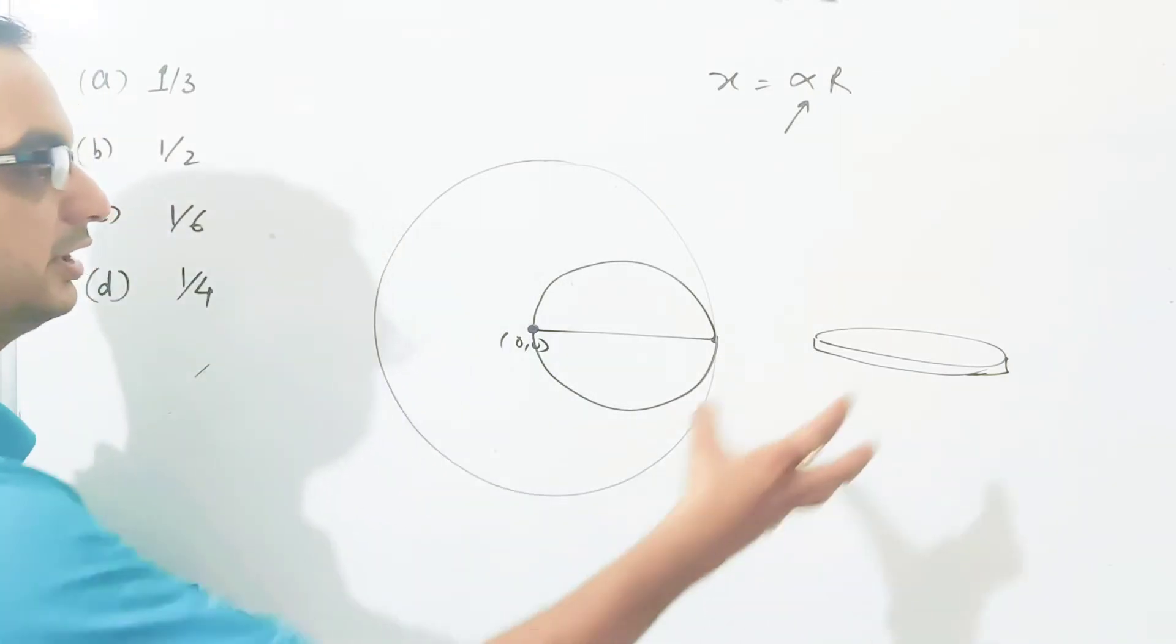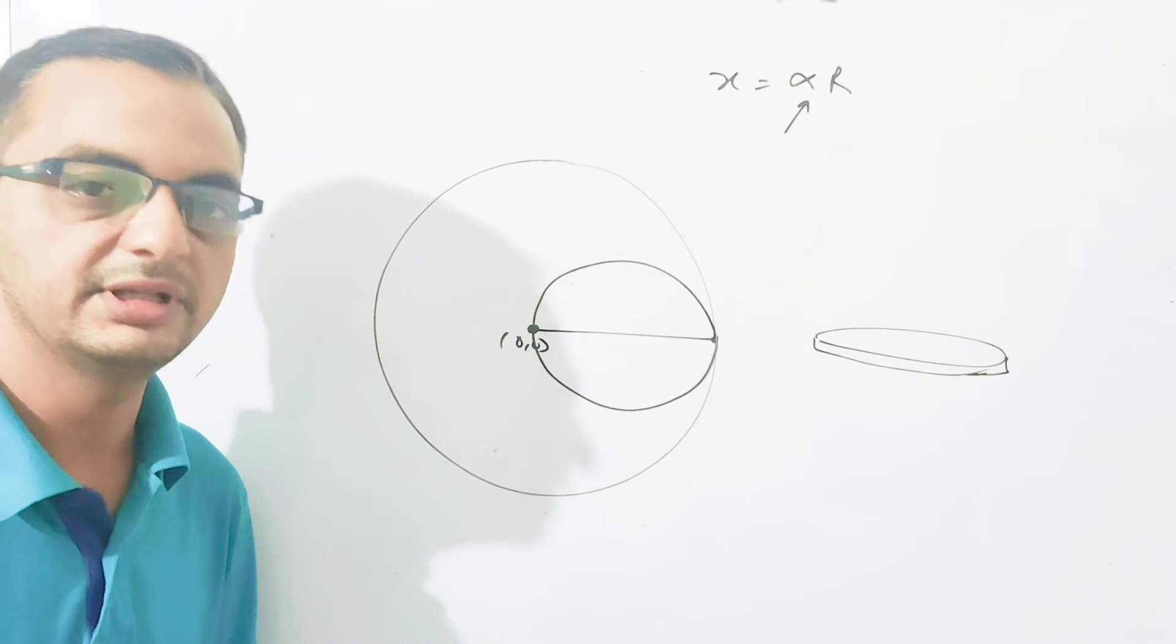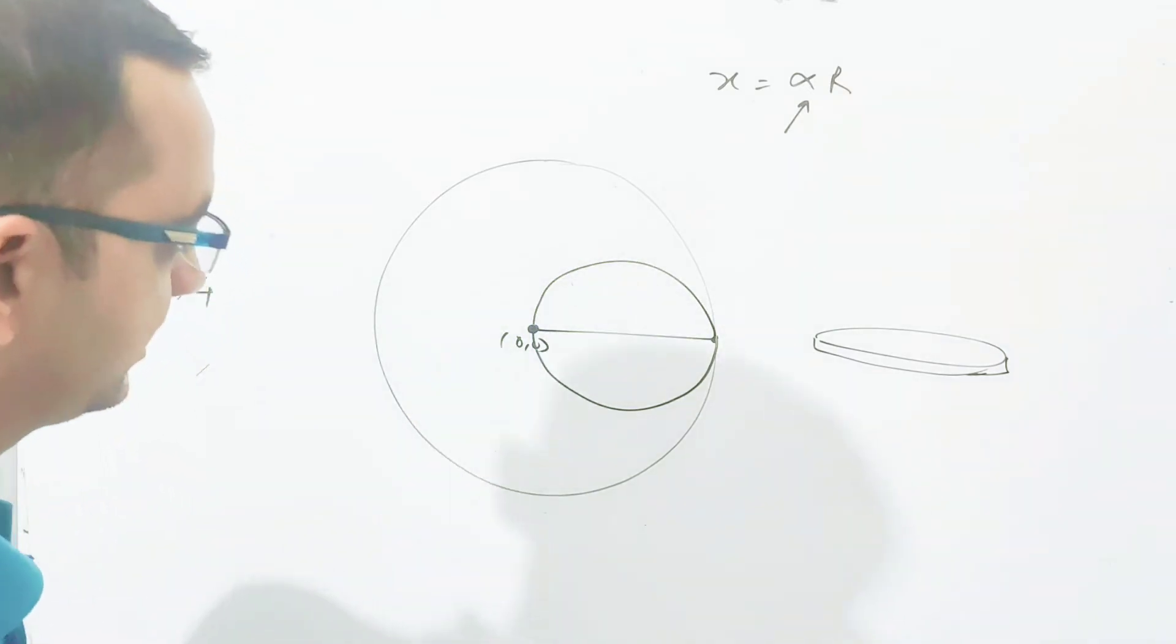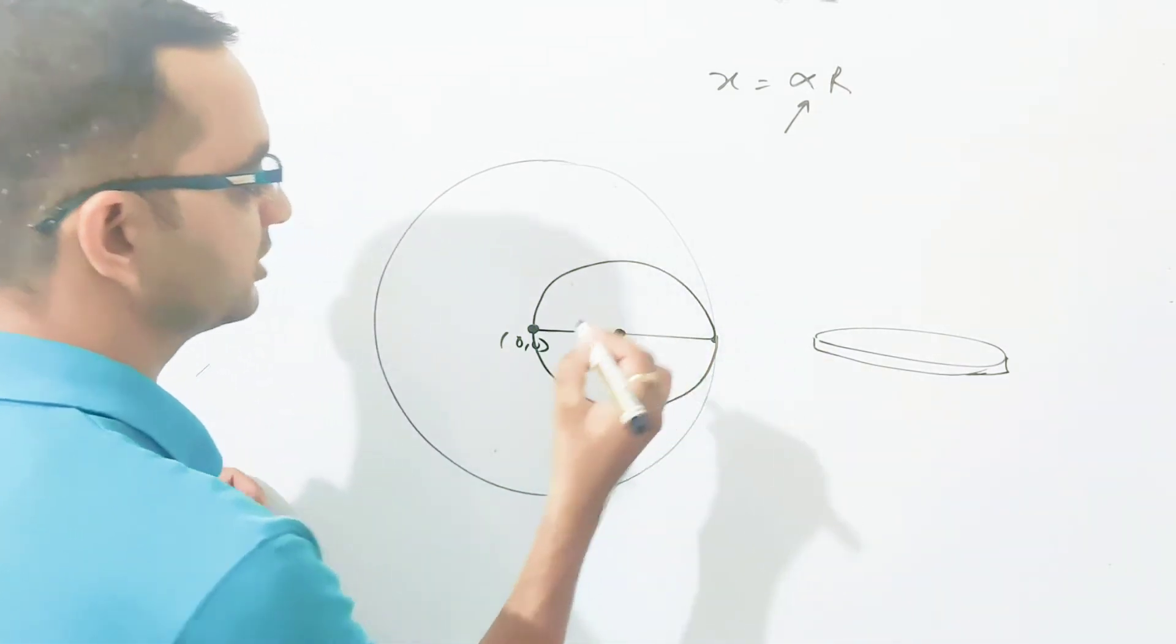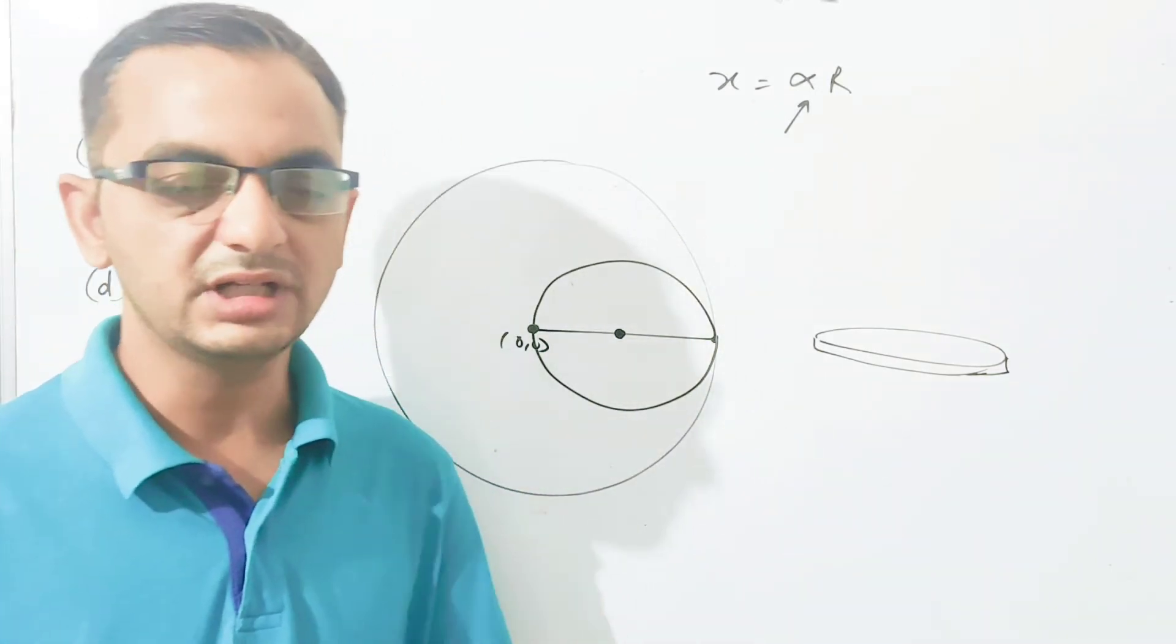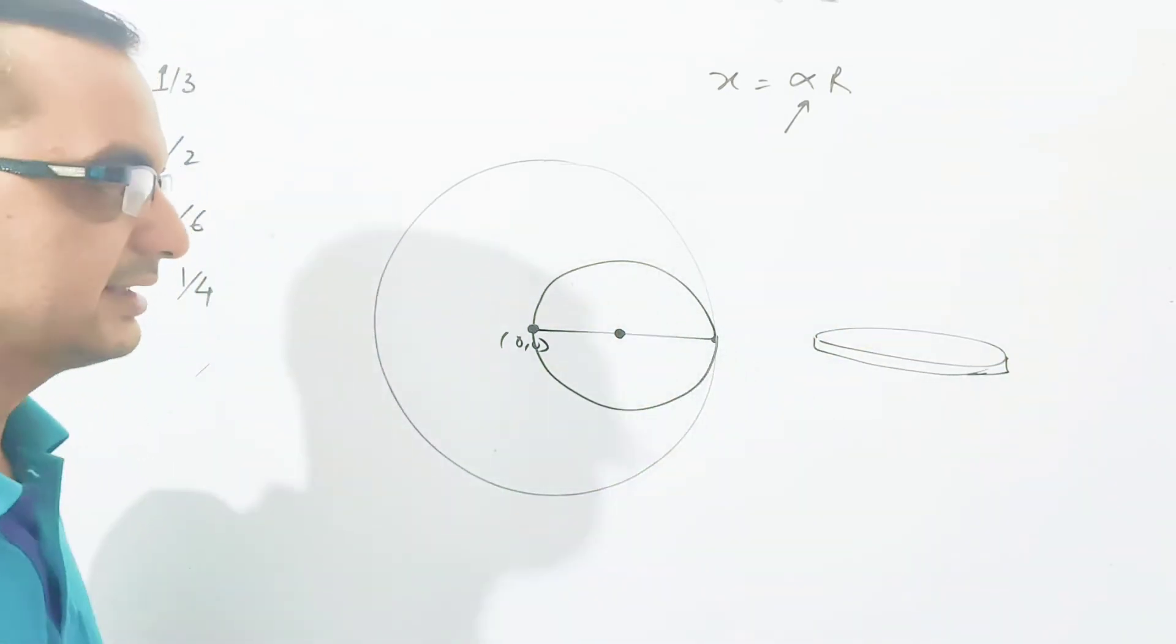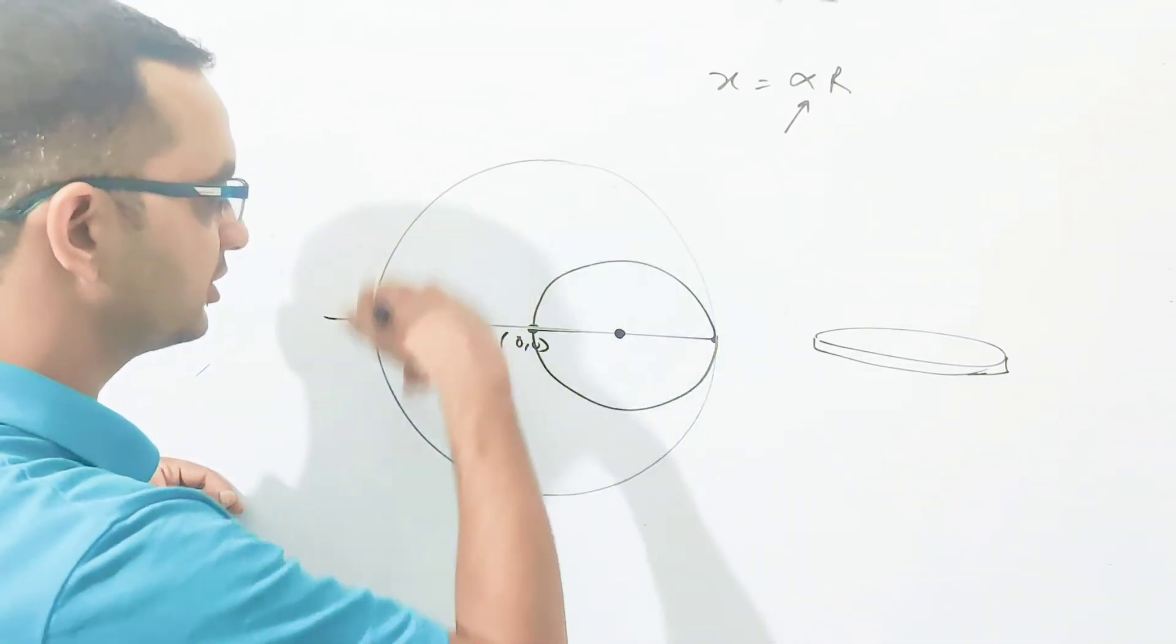If I take this body and this portion as single points at their centers of mass, the whole body can be replaced by a point at its center of mass. The whole disc can be treated as a point. Similarly, the remaining part can be treated as a point at some position.